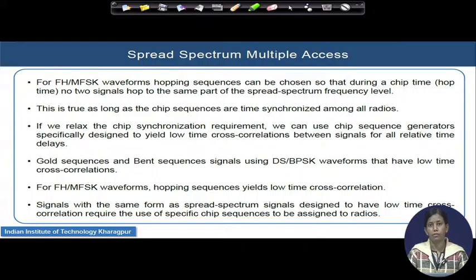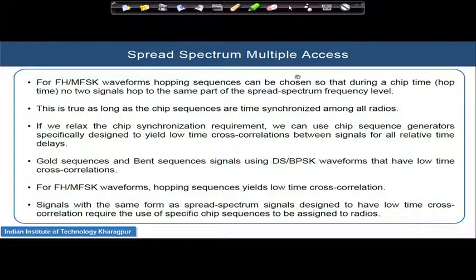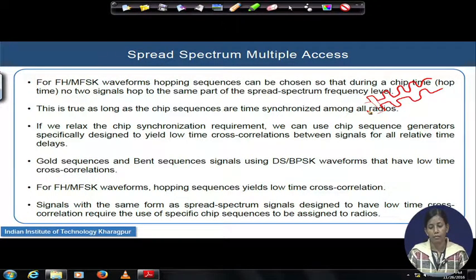We have heard about frequency hopping MFSK systems and waveforms. Their hopping sequences can be chosen such that during a chip time or a hop time, no two signals hop over the same frequency during the same hop duration. If that can be ensured, you can definitely provide protection against multiple access interference. If two signals are designed with different hopping patterns such that within a chip sequence or hopping duration, two hopped signals are never coinciding or overlapping, then you can avoid interference between such two users.